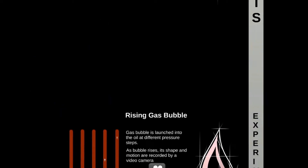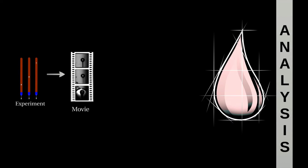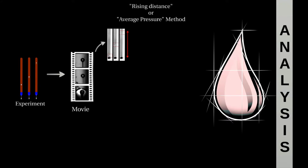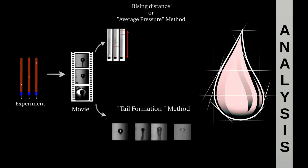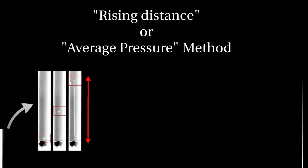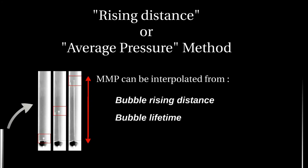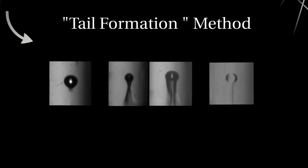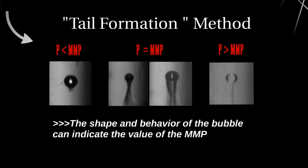Gas bubble rises through the oil at different pressure steps. As the bubble rises, its shape and motion are recorded by a video camera. At every step, the oil is refreshed. For each bubble rising, a movie is recorded. There are two main methods to analyze the movie: the rising distance or average pressure method, and the tail formation method. With the first method, we focus on the trajectory itself of the bubble. MMP can be interpolated from the bubble rising distance, the bubble lifetime or average pressure, between the step when the bubble reaches the top or the bottom of the column. With the tail formation method, the shape of the bubble itself is carefully observed. Indeed, close to the MMP, the bottom of the shape will become wavy and blurred — this is an indication to identify the MMP.